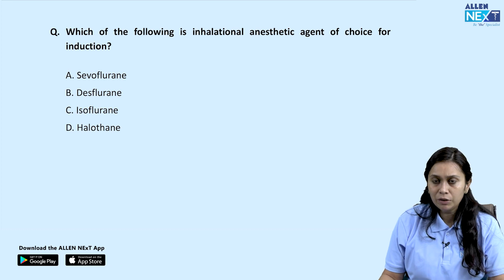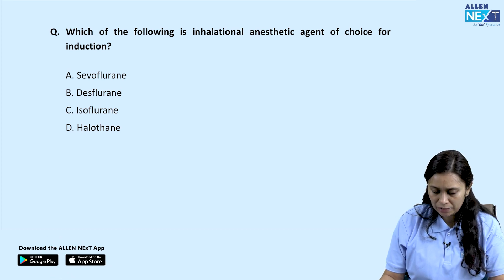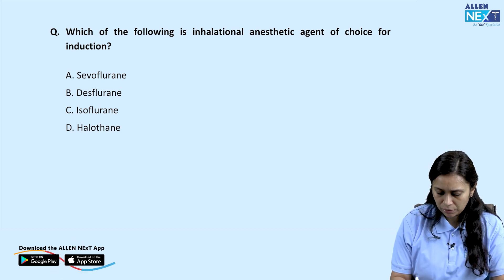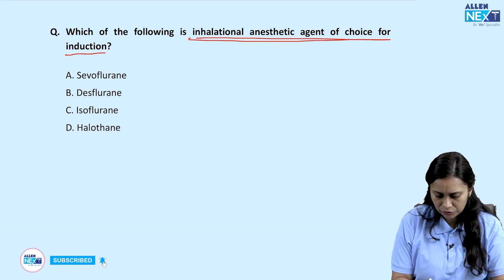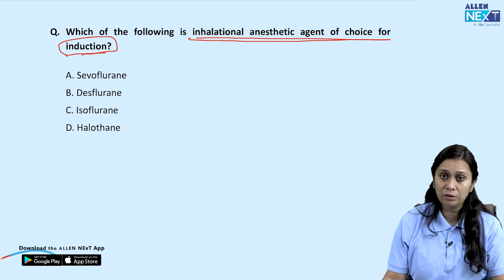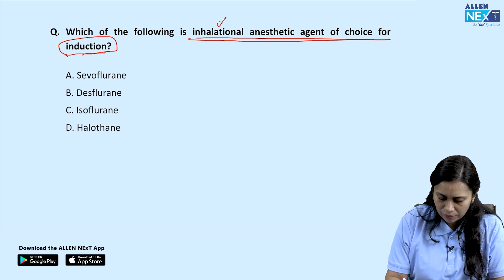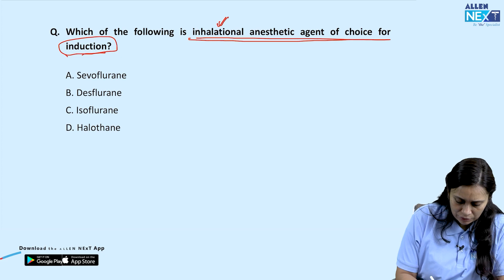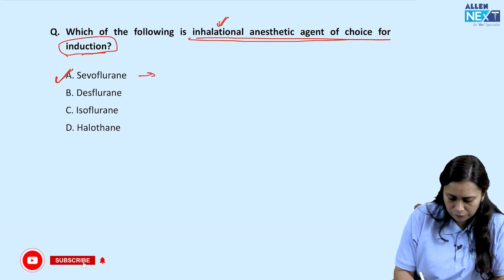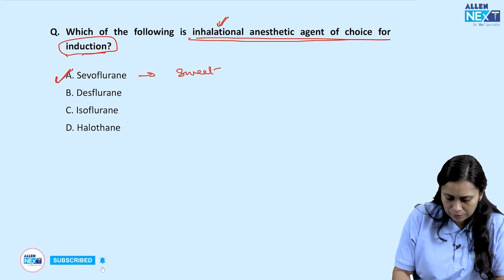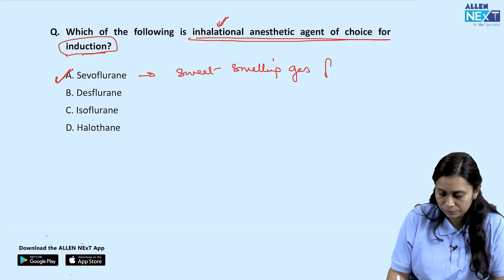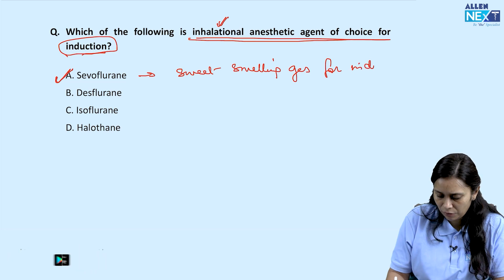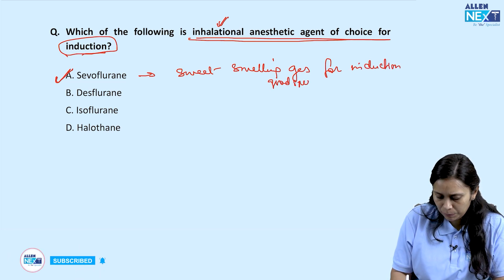Coming to the next question: which of the following is the inhalational anesthetic agent of choice for induction? The key word here is 'induction' and they have asked about an inhalational agent. The answer is Sevoflurane — a sweet-smelling gas that is best for induction due to good speed and pleasant odor.